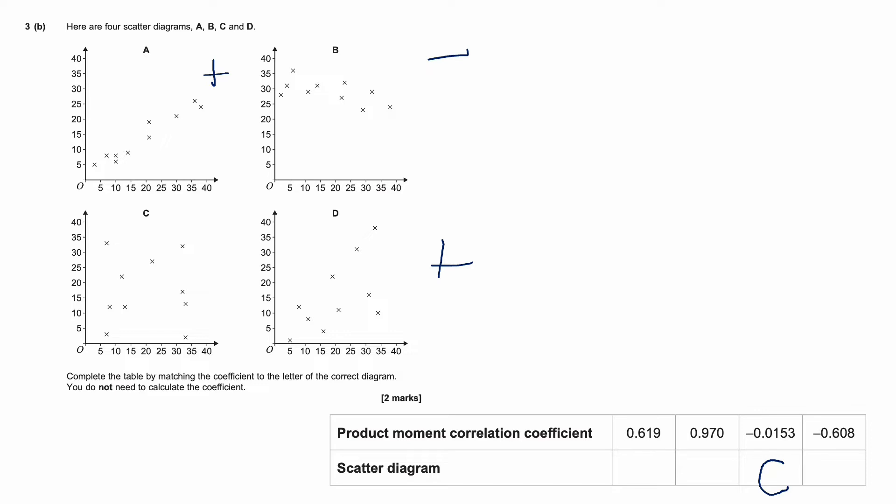We know B is negative, so the only other negative one is B. And then we just need to decide which of these two positive ones is which. And A is much more tightly near it or looks more like a line. So that's going to be the stronger number, which is 0.9. And the other one that's left, D, will be 0.619. So we don't need to work anything out, but we just need to match up using information such as positive, negative and how close to a straight line they are.